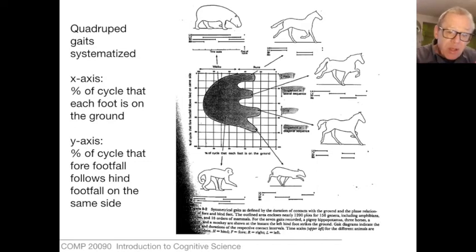So each foot will be on the ground for some percentage of the cycle, maybe a lot of it, maybe a little bit, and this will apply to all four-legged animals. The y-axis shows something about the coordination among the limbs, the percentage of the cycle that the forefoot fall follows the hind foot fall on the same side. So using those two basic indices, we can look at all four-legged animals and plot them in here. A hippopotamus obviously walks very differently from a mouse. The hippopotamus is very heavy, and its feet will be on the ground an awful lot more than a mouse would.